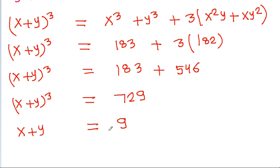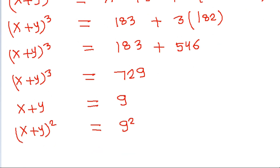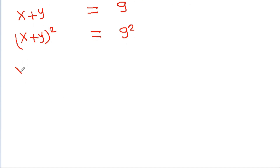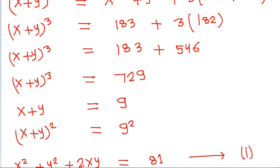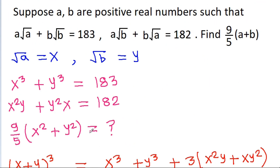If we square both sides, we get x plus y whole squared is equal to 9 squared, so x squared plus y squared plus 2xy is equal to 81. Suppose this is equation 1. And we have to find the value of 9 by 5 times x squared plus y squared. We have been given that x squared y plus y squared x is equal to 182.